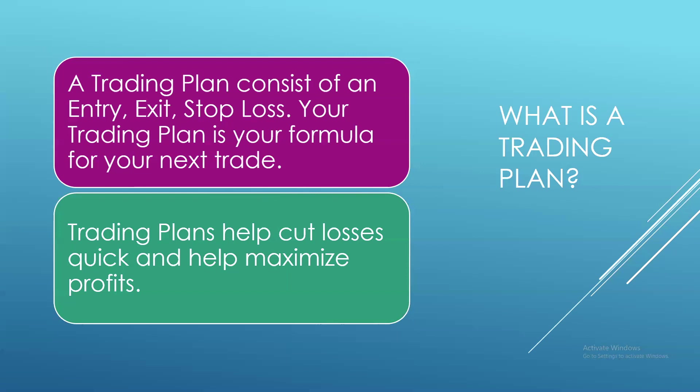A trading plan makes sure that doesn't happen. Because we already have our guidelines: if I buy at one dollar, I'm not selling until it hits $1.20, and if the stock does not go my way I get out at a set level that keeps my loss small. My gains are going to be bigger than my losses if I follow my trading plan every single time.